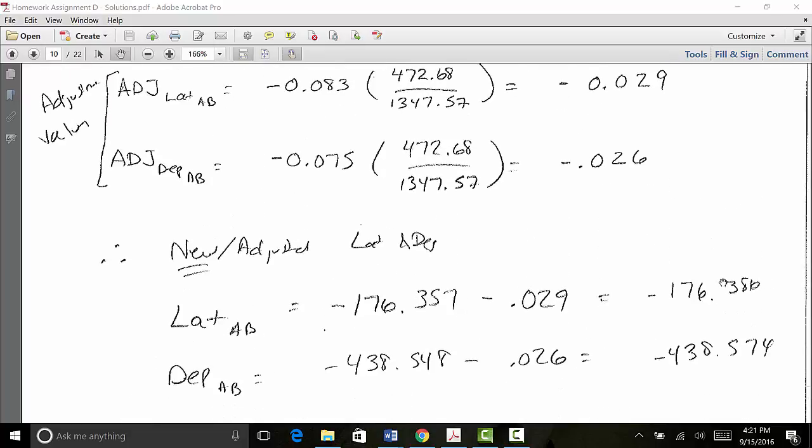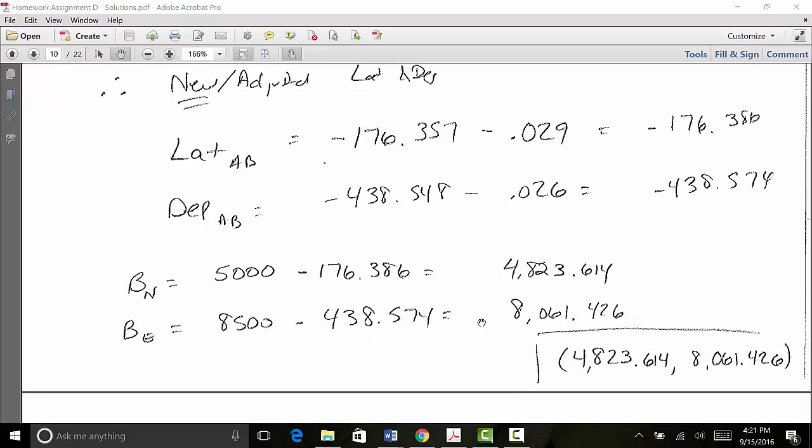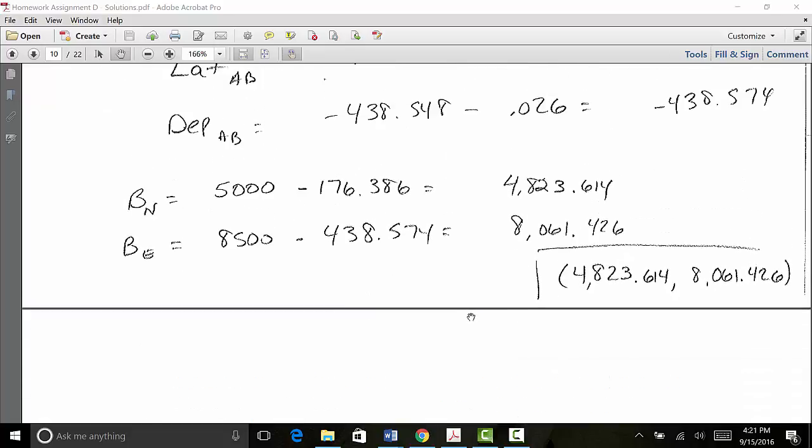Now I simply know that if I know the coordinates of A are 5,000, 8,500 and I know that I've gone 176.386 feet to the south to get from A to B, and if I know the coordinate for A is 8,500 to the east and I have to travel 438.574 feet to the west, I do this calculation and figure out these are the coordinates, my adjusted coordinates for point B. Okay? So I do that for every one of my points and now I should have a traverse that is adjusted and should be closing. So that is adjusting a traverse using the compass rule.